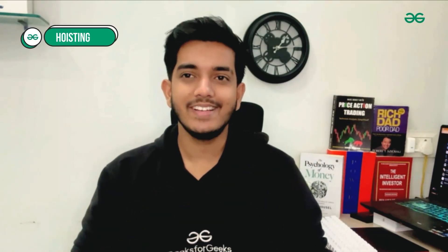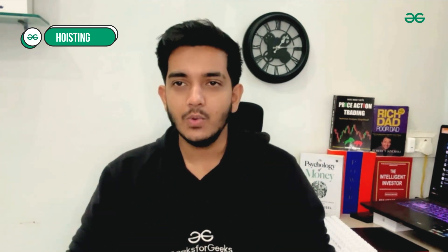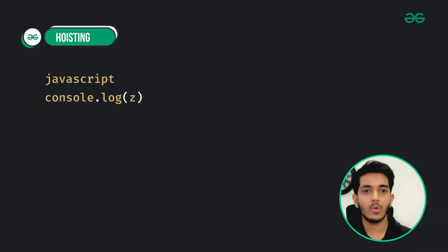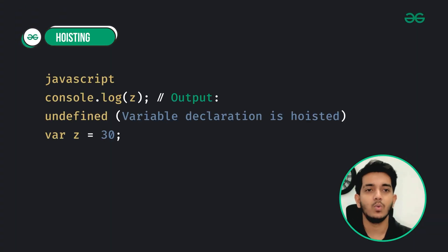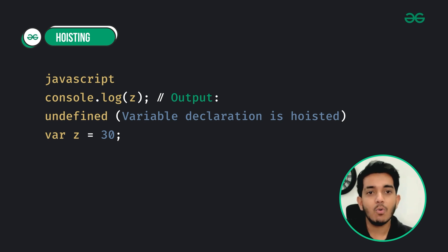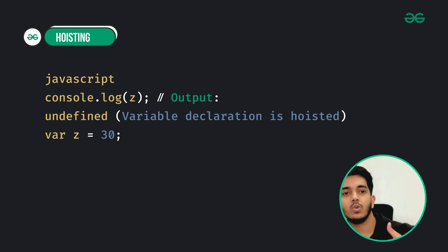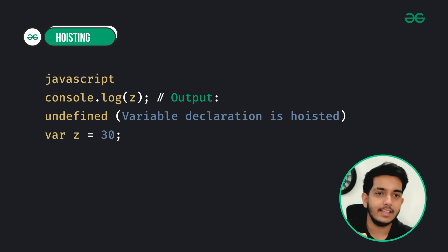The third concept is hoisting. Hoisting is JavaScript's behavior of moving variable and function declarations to the top of their containing scope during compilation. Here you can see that even though we are trying to log Z before the declaration, JavaScript moves the declaration to the top, giving us undefined instead of an error.